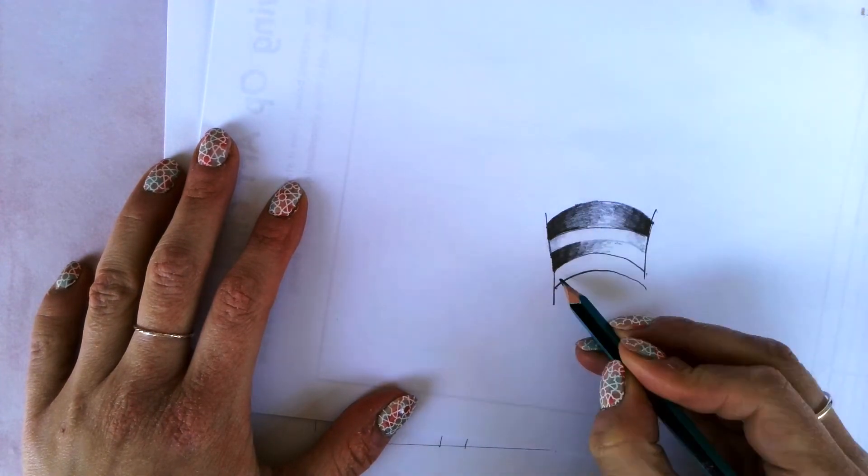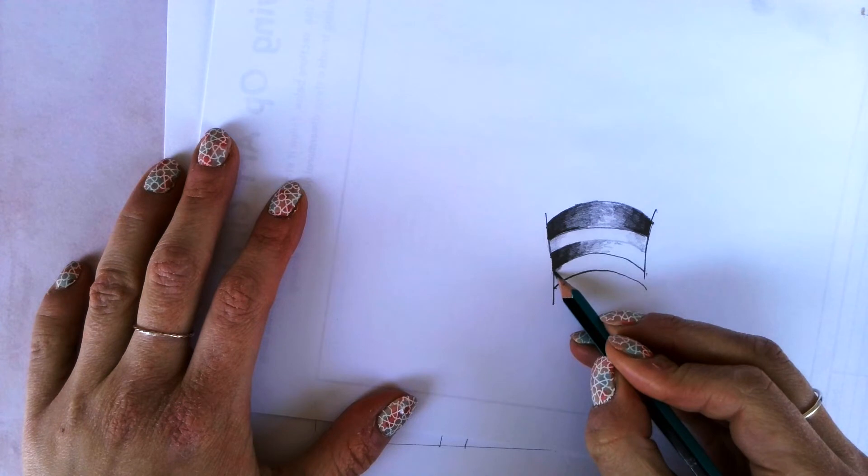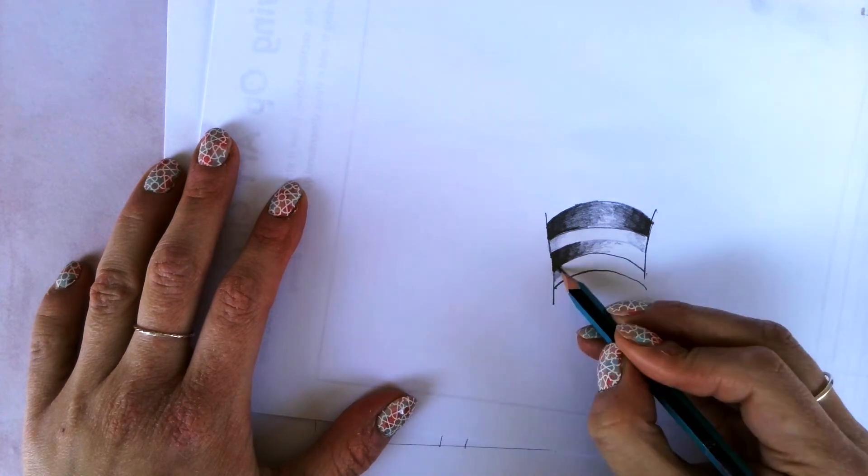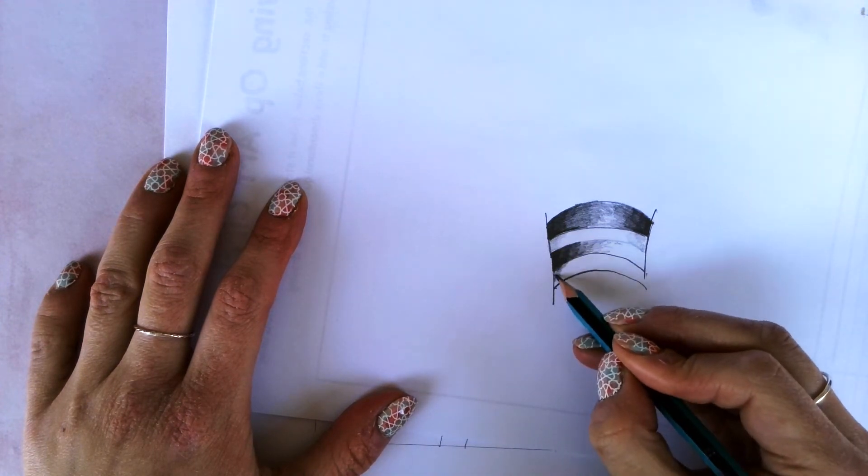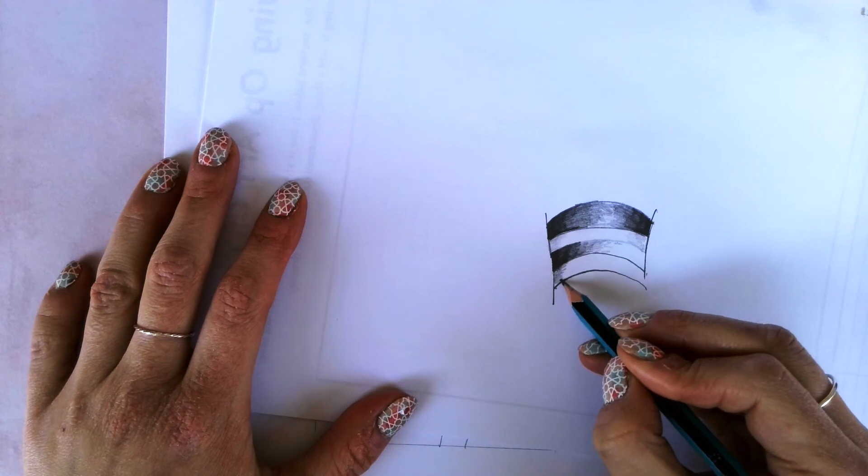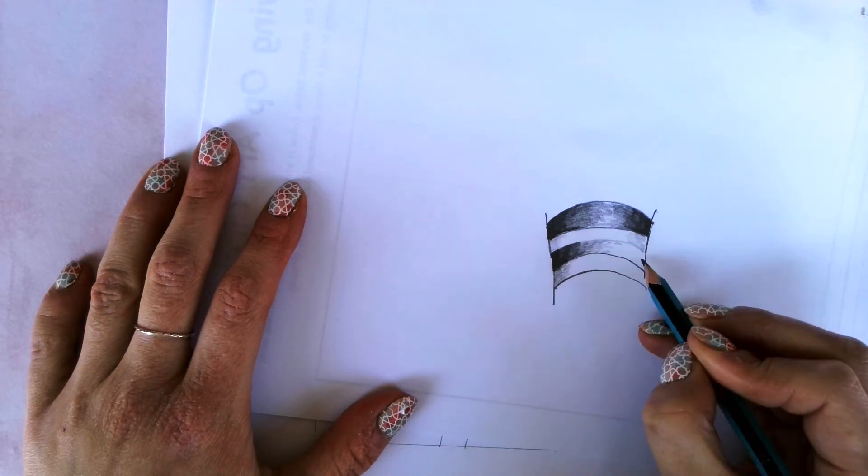And then when you have the light sections, if you do a tiny bit of shading in the edges where it starts with the next pattern, you'll achieve a much more three-dimensional effect.